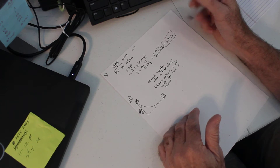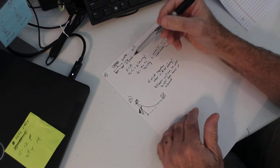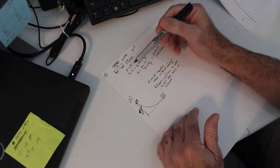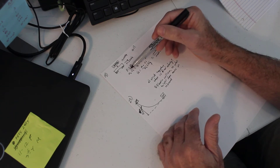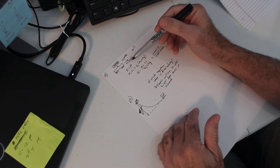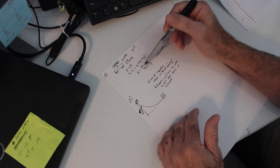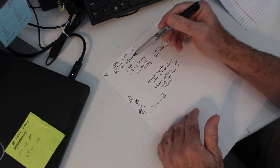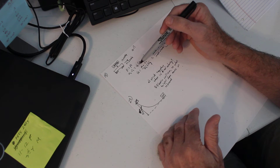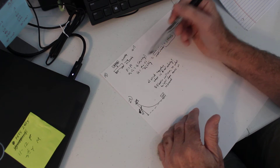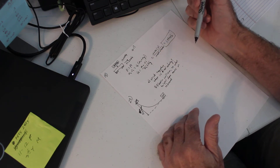Very simple problem, but it shows the steps. Set up the initial momentum equals the final momentum, and then figure out what kind of situation it is. In this case it was an inelastic collision, so that's how I set up the problem.